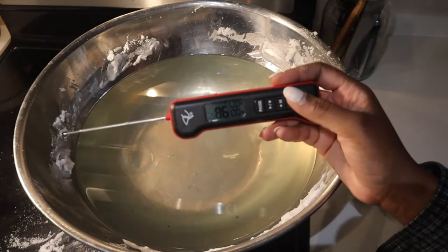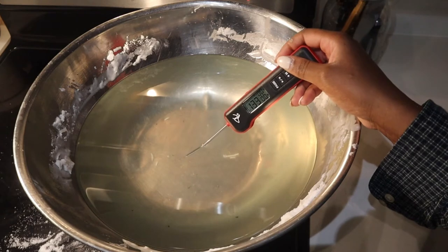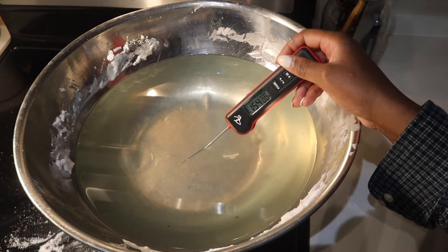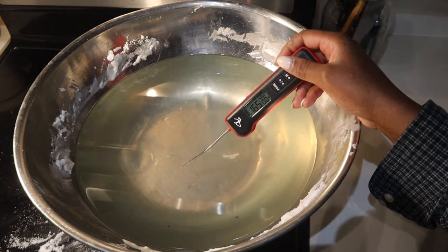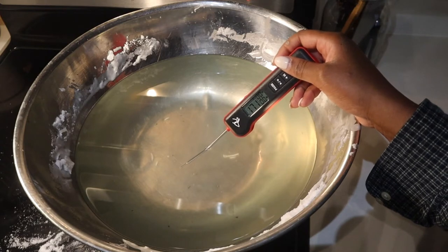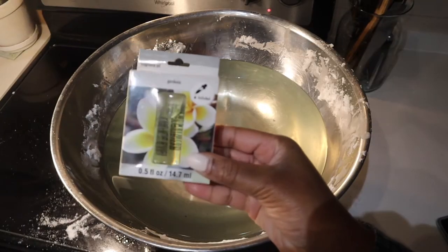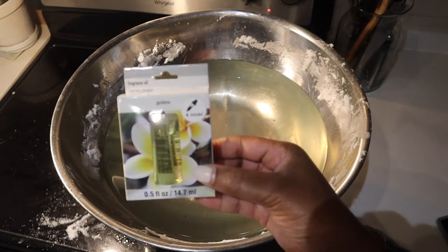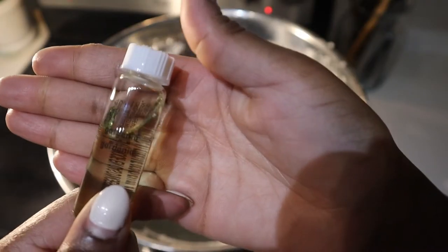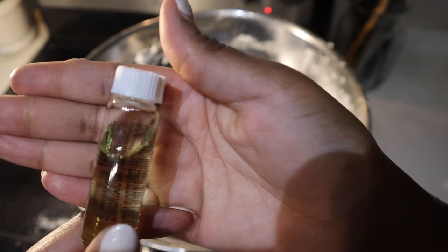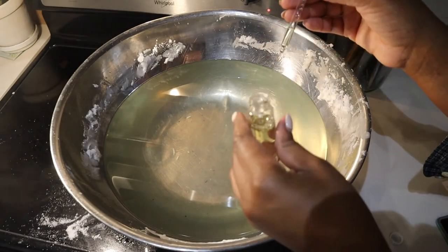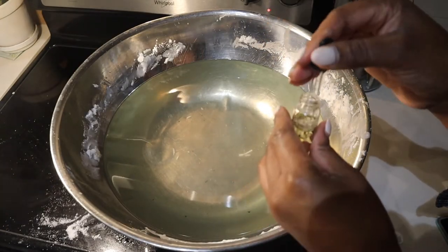Once your wax is all melted, you want to check the temperature and it should be between 175 to 185 Fahrenheit. Next, you're going to take your fragrance oil of choice, and the ratio is 10% of the quantity of wax you have. Because I cheaped out on the wax, I did not cheap out on the fragrance oil, and honestly this combination smells so good.